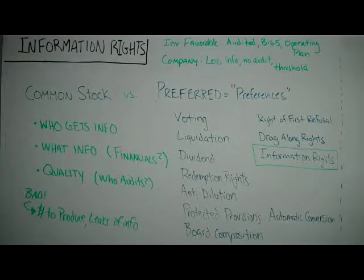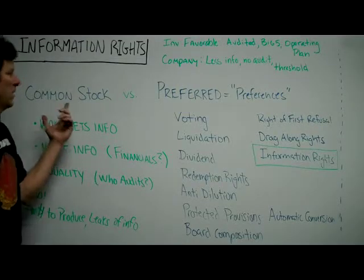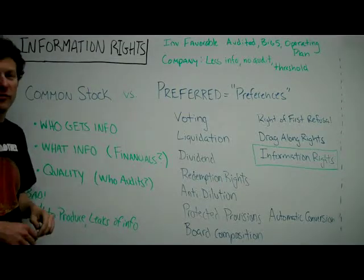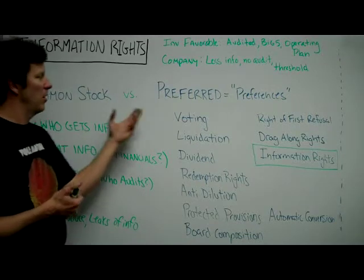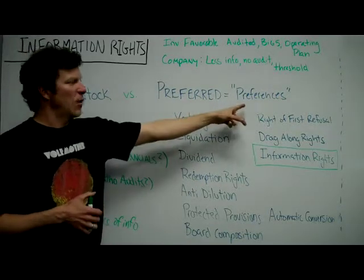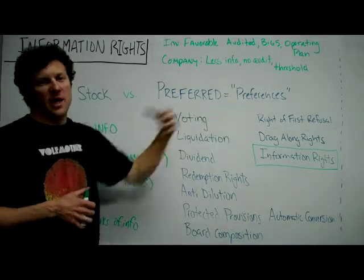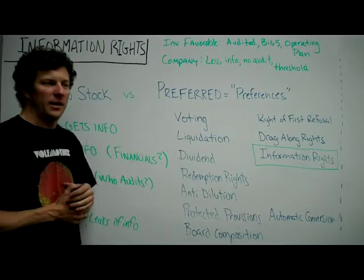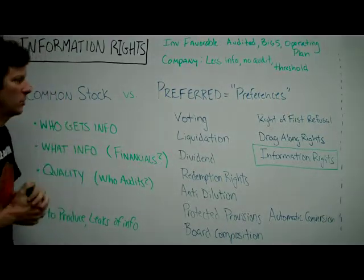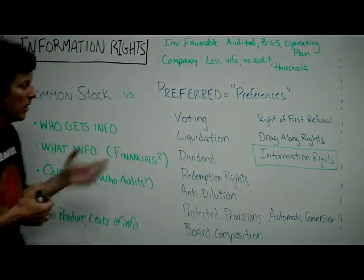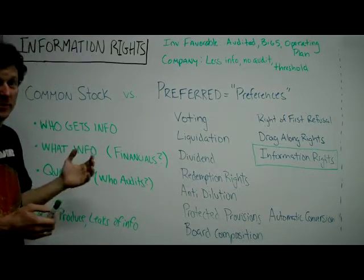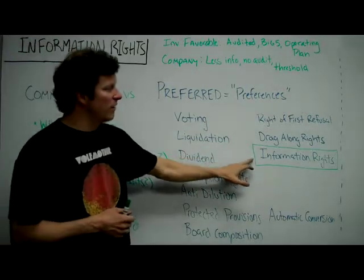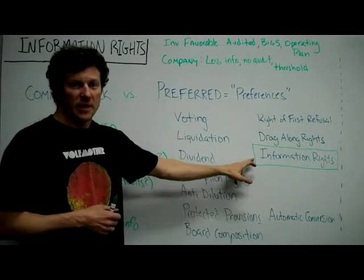We're talking about information rights. We're discussing common stock versus preferred stock. The single thing that sets preferred stock apart is that preferred stock shareholders get preferences — they have certain rights assigned to them that common stock shareholders don't. This is a big list of the preferences that preferred stock shareholders will sometimes have. Right now we're talking about information rights — what does that mean?